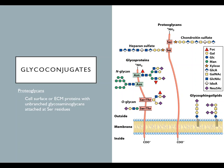Let's talk about glycoconjugates. A glycoconjugate is something else attached to a carbohydrate—basically a protein or lipid in most cases. There are broadly speaking three kinds of glycoconjugates: proteoglycans, glycoproteins, and glycolipids. Proteoglycans and glycoproteins are proteins that have carbohydrates attached to them, and glycolipids are lipids that have some sort of sugar molecule as the head group.